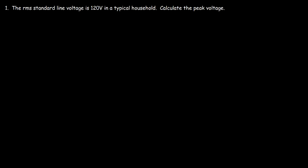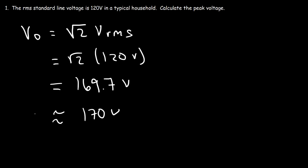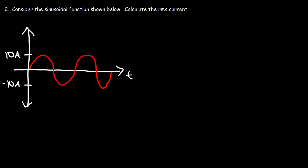Problem 1: The RMS standard line voltage is 120 volts in a typical household. Calculate the peak voltage. The peak voltage is equal to the square root of 2 multiplied by the RMS voltage. So the RMS voltage is 120 volts, and multiplying by the square root of 2 gives 169.7 volts — approximately 170 volts. That's the peak voltage found in a typical household.